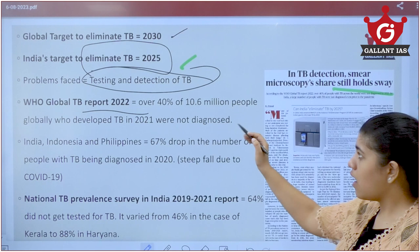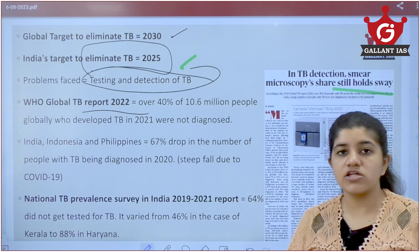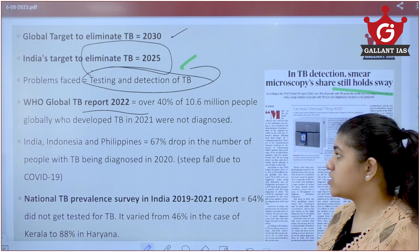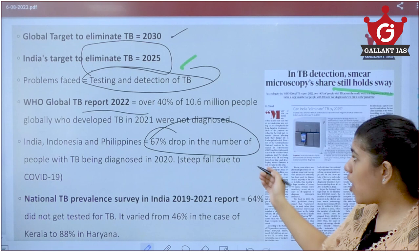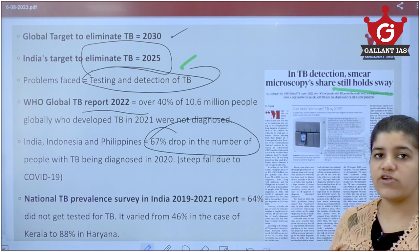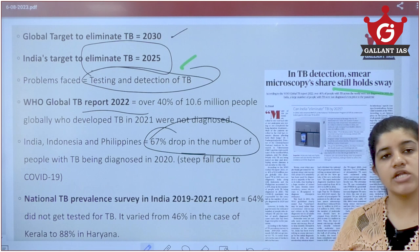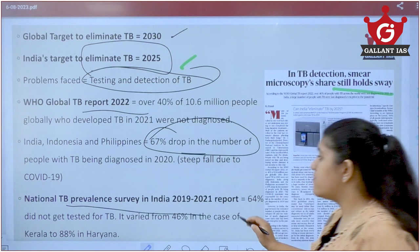According to the WHO Global TB Report 2020, over 40% of the 10.6 million people affected by tuberculosis are not properly diagnosed. The majority of this gap is in countries like India, Indonesia, and the Philippines, where 60% of TB cases saw a drop in proper diagnosis. This drop is mainly because of COVID-19, which caused a shift in healthcare focus and reduced TB testing and diagnosis.